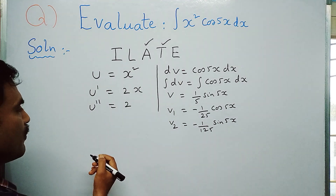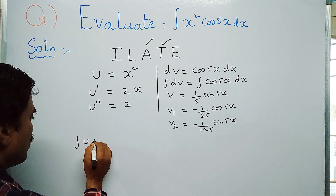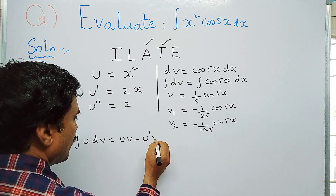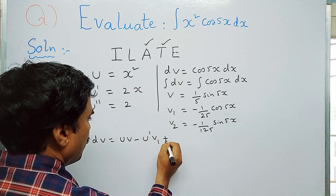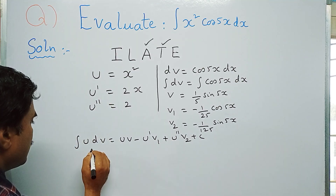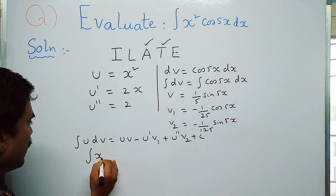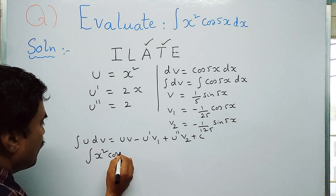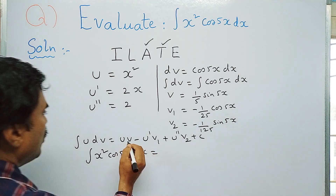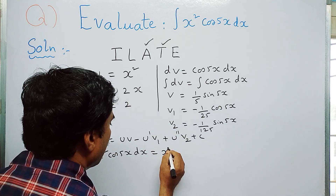Now write the Bernoulli's integration by parts formula: ∫u dv = u·v − u′·v₁ + u″·v₂ + C. Here u = x² and dv = cos 5x dx.